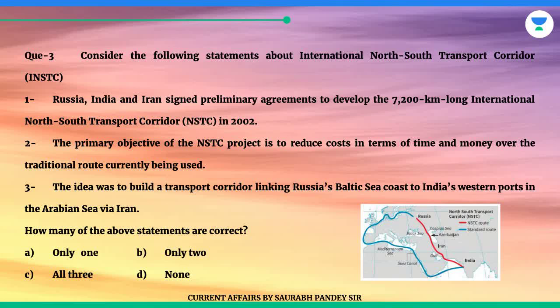Statement 2: The primary objective of the NSTC project is to reduce costs in terms of time and money over the traditional route currently being used. Statement 3: The idea was to build a transport corridor linking Russia's Baltic Sea coast to India's western ports in the Arabian Sea via Iran.